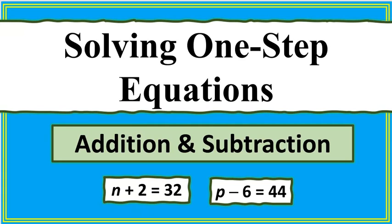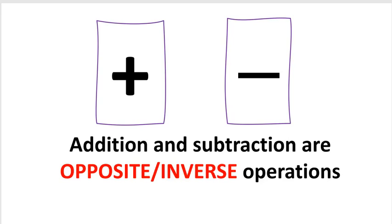Today we will learn how to solve one-step equations. The very first thing we need to know is that addition and subtraction are opposite operations — they're also called inverse operations. Let's do some examples.